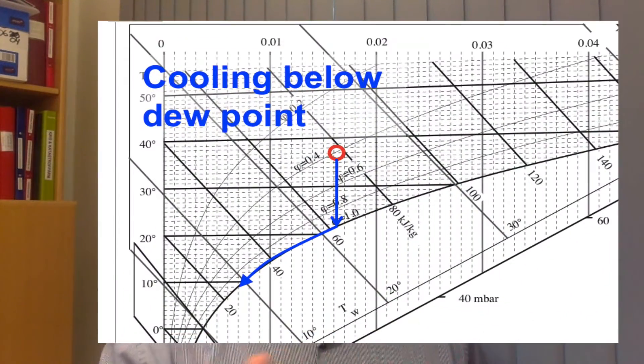But if you do cool further down, then what happens is that you follow the dew point line, so the water content in the air will actually decrease and droplets will form. So you have condensation in the air.